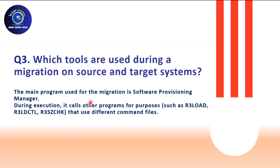You need to know which tools are used during the migration. The first tool is SWPM — we use SWPM 1.0, or SWPM 2.0 for S4HANA systems. For other systems like Business Suite or Java systems, you use SWPM 1.0. The key program used for export and import is R3load — the R3load process is invoked by the migration monitor to handle the actual data export and import.